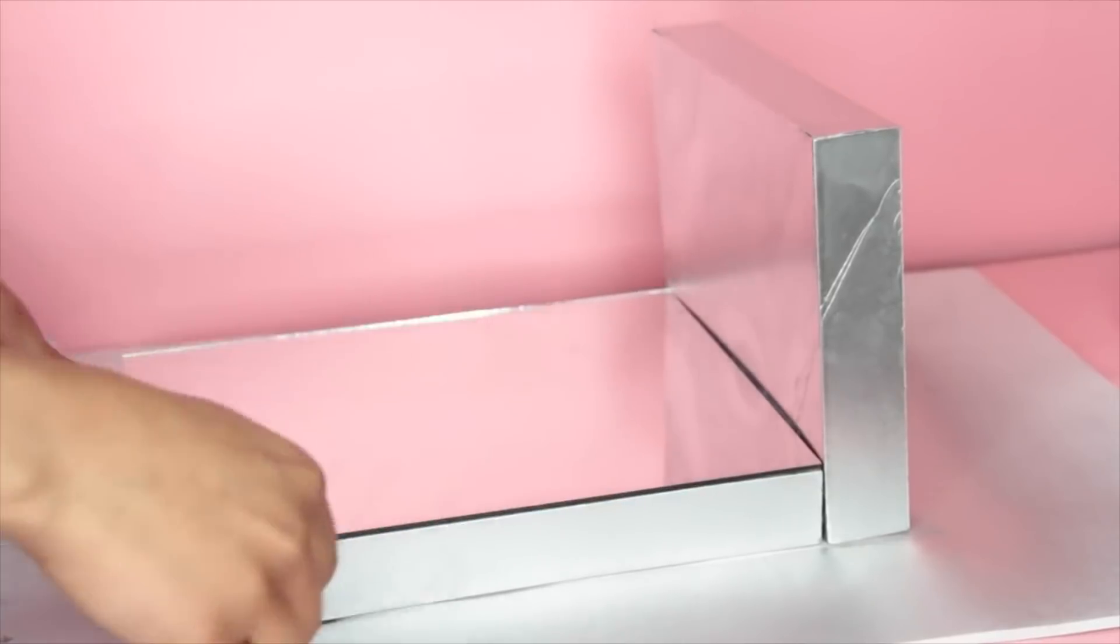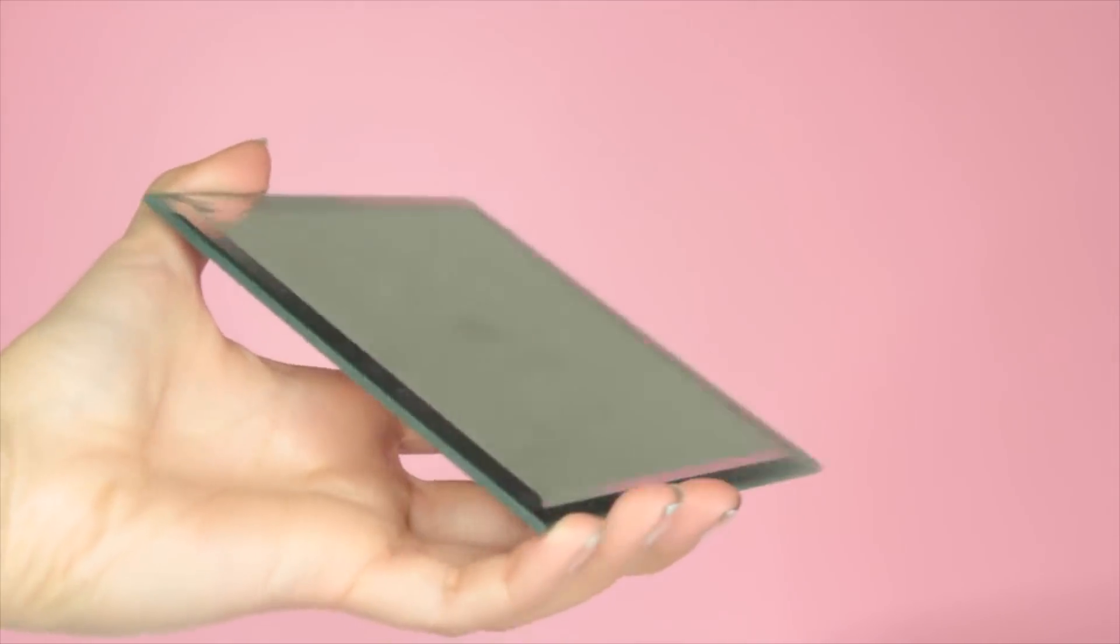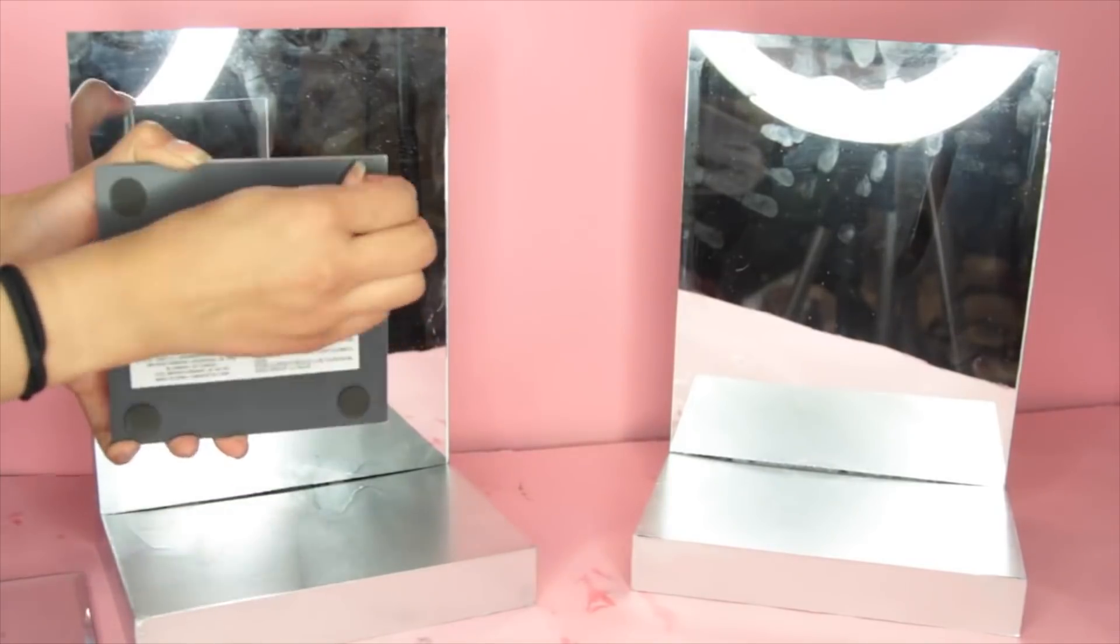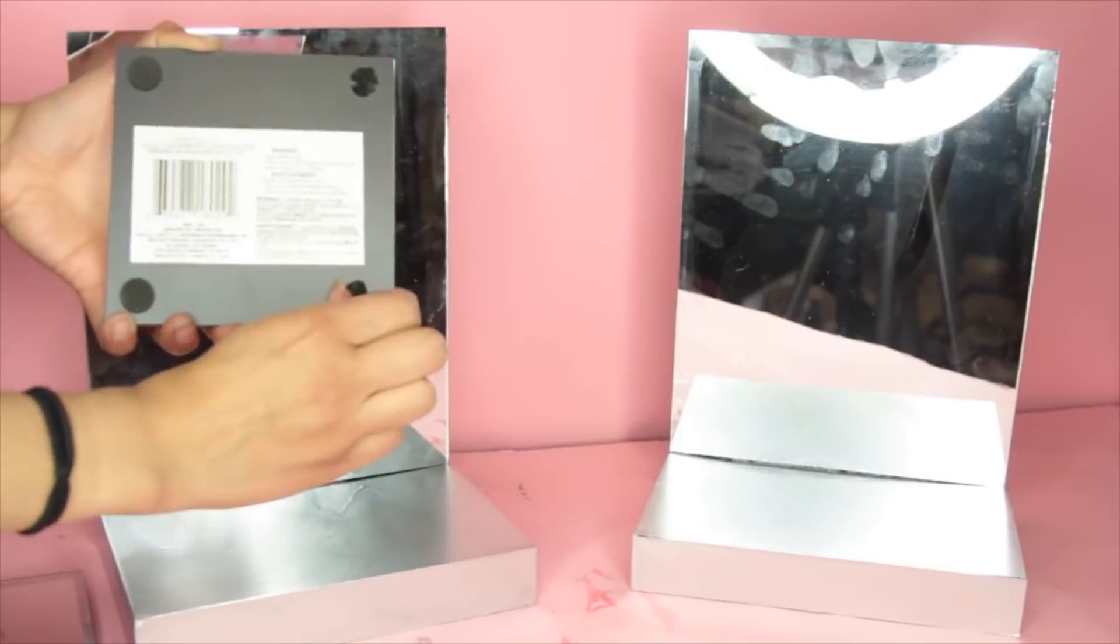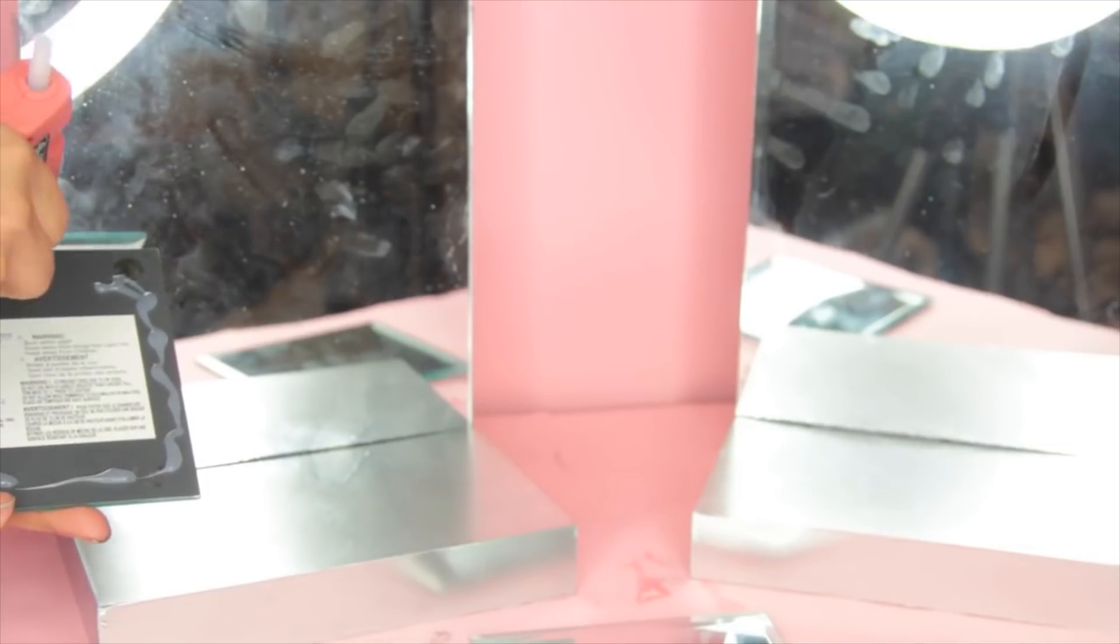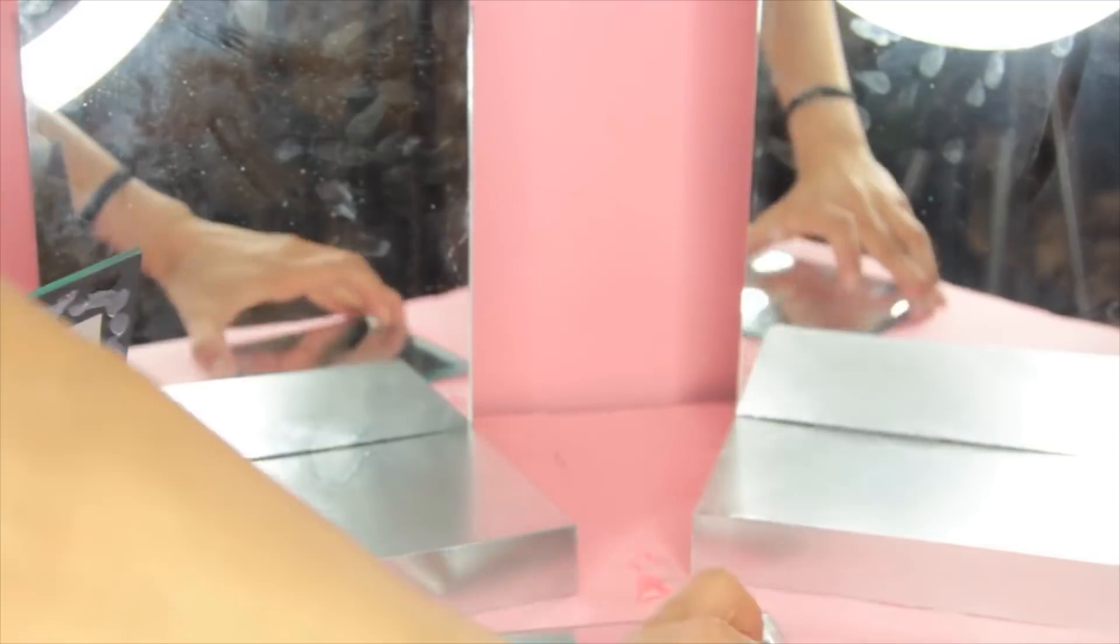For the mirror on the smaller box, I'm using the square candle mirrors from Dollar Tree. I remove the foam legs on the bottom of the mirrors before gluing the mirrors to the smaller box. That's how you make the stand piece.